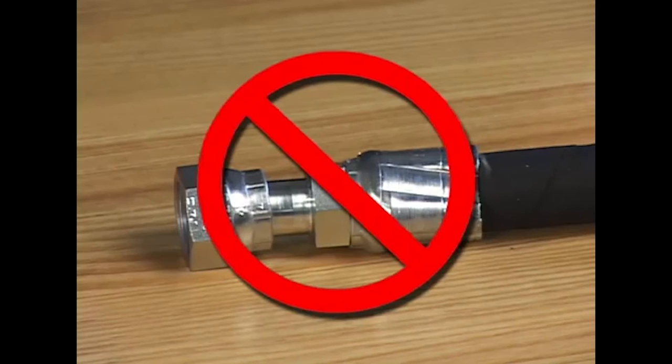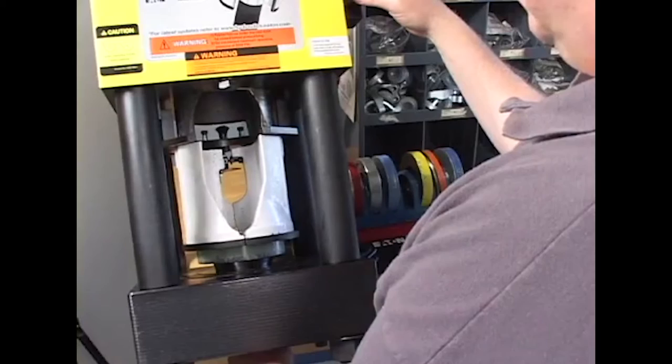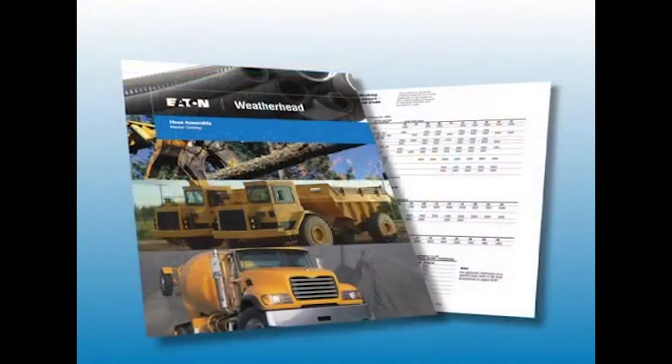Never reuse a hose end once it has been crimped. You will also need a new length of hose if the previous one was damaged or if it is too short for the application. This assembly procedure may now be repeated for the other hose end, following the identical steps.